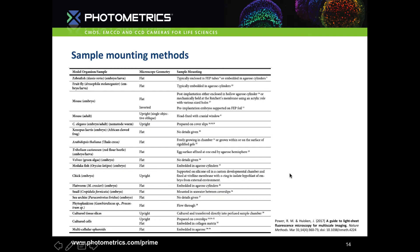This chart from a recent Huisken paper details the best way to mount certain sample types. For example, zebrafish are typically enclosed in FEP tubes or used in agarose cylinders, whereas C. elegans would be viewed on coverslips. The examples don't cover the entire library of lightsheet samples, since lightsheet is in constant development and new methods to image new model organisms are still published regularly.